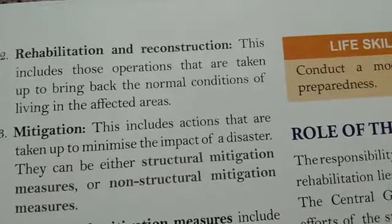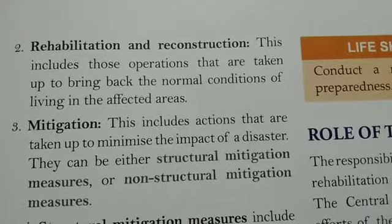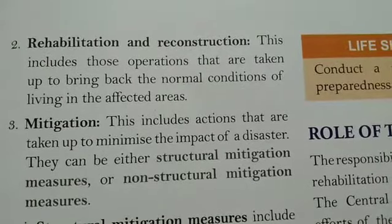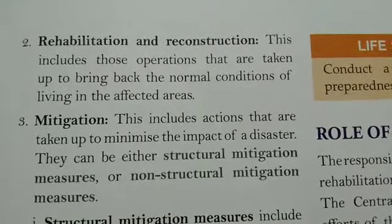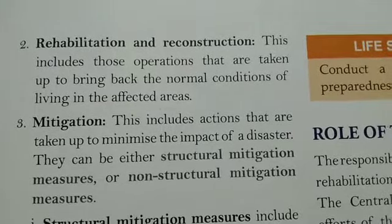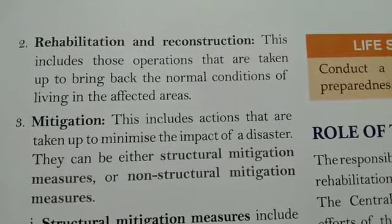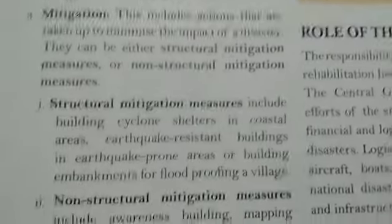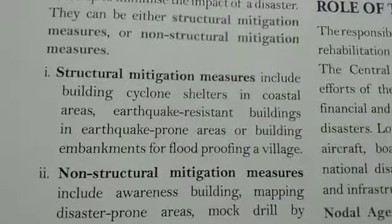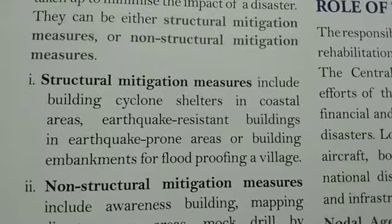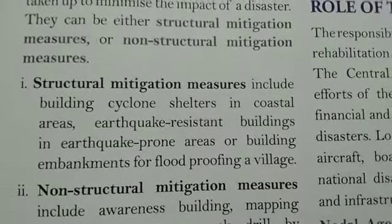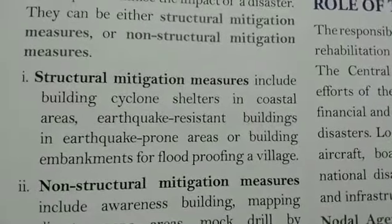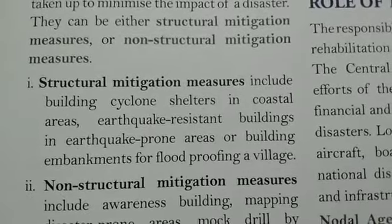The third stage is mitigation. This includes actions that are taken to minimize the impact of a disaster. They can be either structural mitigation measures or non-structural mitigation measures. Firstly, the structural mitigation measures — it includes building cyclone shelters in coastal areas, as coastal areas are usually cyclone-prone areas, so building cyclone shelters is very essential there.